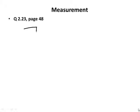Let's start with a very simple problem — Question 2.23 on page 48. You're shown pictures of four rulers with different calibrations, and they're asking you to find the uncertainty of measurement in each of the four rulers. Let's look at the first one, where the calibrations go every one centimeter.